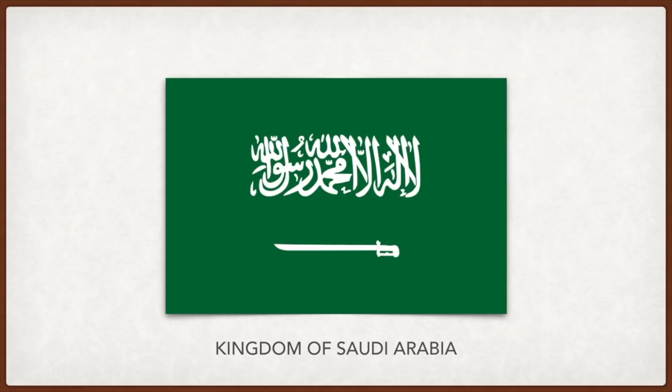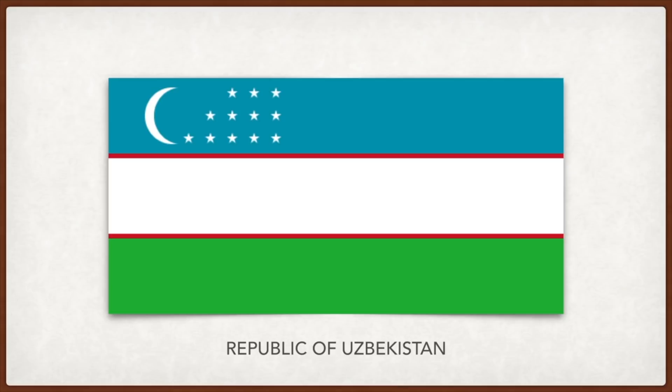The crescent represents Uzbekistan as an independent country and symbolizes Islam. The 12 stars represent the 12 months of the Islamic calendar and the 12 constellations of the zodiac.